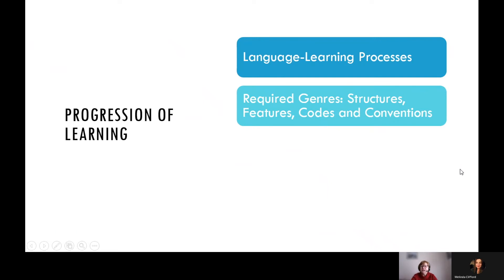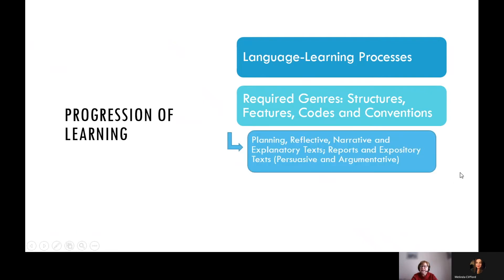These are the text types required in the secondary programs. We have planning texts such as project proposals, outlines, graphic organizers, and checklists. Reflective texts include journals or logs, self-evaluations, a magazine commentary, and small or large group discussion including responses to a text. Narrative texts are stories told in any form — young adult literature, personal stories, improv, spoken word poetry, memoirs. Explanatory texts could be pamphlets or how-to videos. Reports could be descriptive, a news report, an interview, or a research report. Expository texts have two types: persuasive texts like advertisements, book reviews, personal essays and speeches, and argumentative texts like debates, editorials, political blogs, and critical essays.